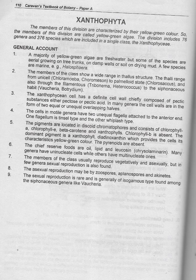Number seven: the members of the class usually reproduce vegetatively and asexually, but in a few genera sexual reproduction is also found. Number eight: asexual reproduction may be by zoospores, aplanospores, and akinetes.